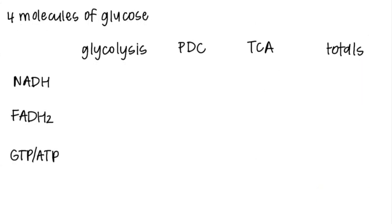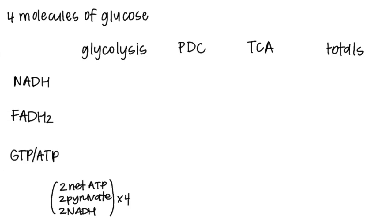Now let's try something a little bit harder. How much ATP is yielded from four molecules of glucose? We know that normally glycolysis produces two net ATP, two pyruvate, and two NADH per glucose molecule. Multiplied by four glucose molecules, in all we make eight NADH, zero FADH2, and eight ATPs.